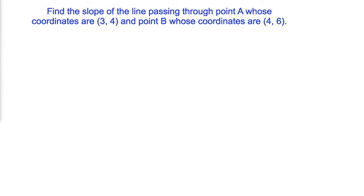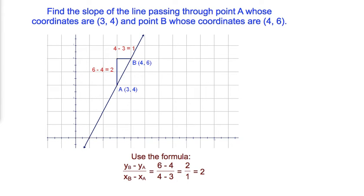Problem number 1: Find the slope of the line passing through point A, whose coordinates are (3, 4), and point B, whose coordinates are (4, 6). Solution: We will use the slope formula. The difference of the y-coordinates of points B and A is equal to 2. The difference of the x-coordinates of points B and A is equal to 1. The slope of the line passing through points A and B is 2 to 1, or 2.